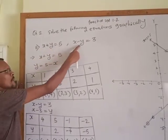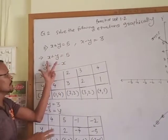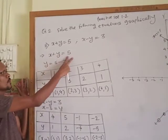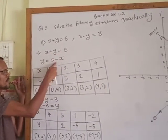x plus y equal to 5, x minus y equal to 3. Again same table. x plus y equal to 5, y equal to 5 minus x.